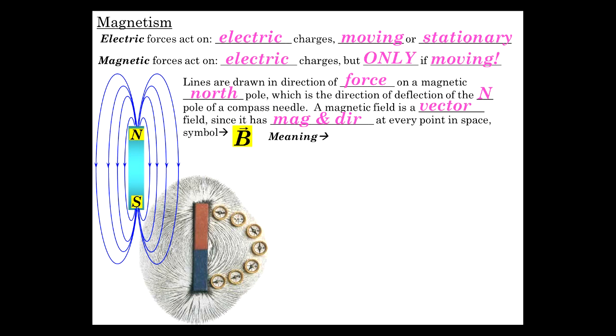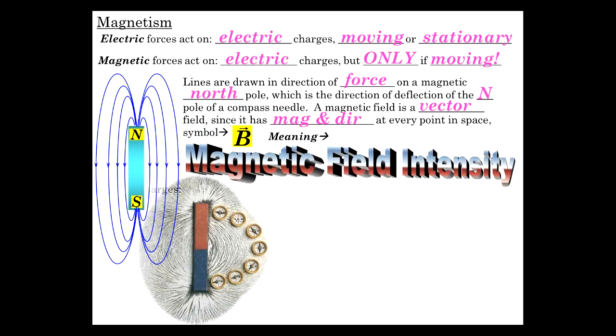Okay, the symbol is B. What's the meaning? When we say magnetic field, or B in particular, it means the magnetic field intensity.